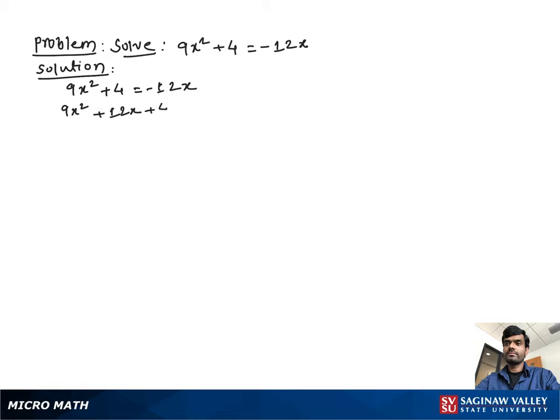So we get 9x² + 12x + 4 = -12x + 12x. Then we get 9x² + 12x + 4 = 0. Now it is a standard form of quadratic equation.